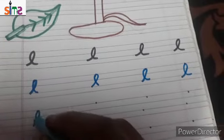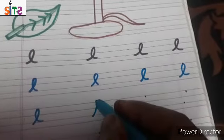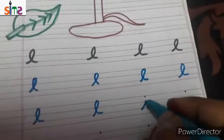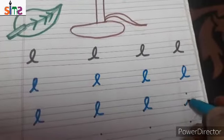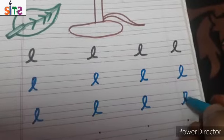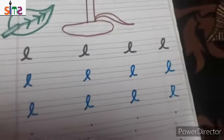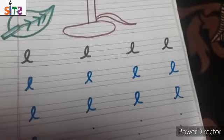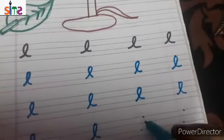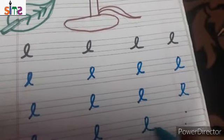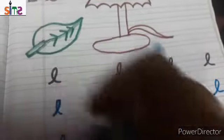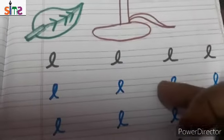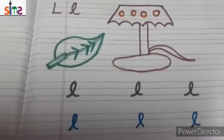L for lion. L for lamb. L for leaf. We will start with the blue line and bring the red line back to write our letter. L for lion. L for leaf. L for lamb. Small l, capital l. So kids, today you will write letter small l. Okay kids, thank you.